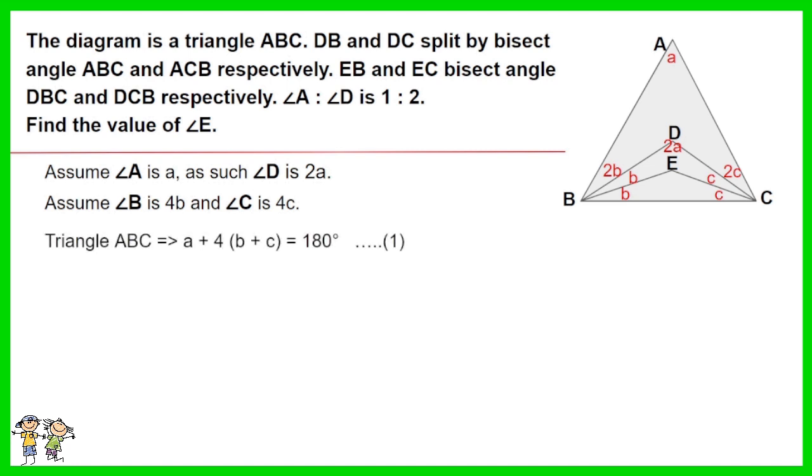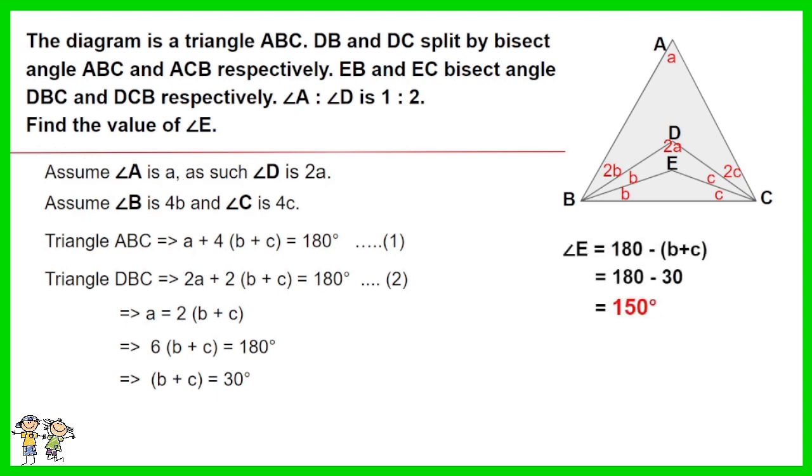For triangle ABC, a plus 4(b + c) equals 180 degrees. This is equation 1. For triangle DBC, 2a plus 2(b + c) equals 180 degrees. This is equation 2. Combining equations 1 and 2, b + c equals 30 degrees. Angle E equals 180 minus 30, which is 150 degrees.